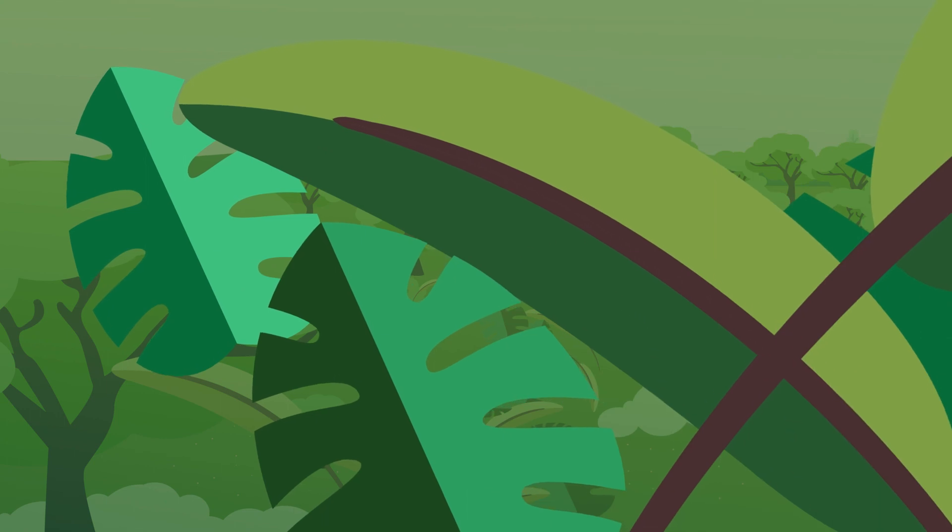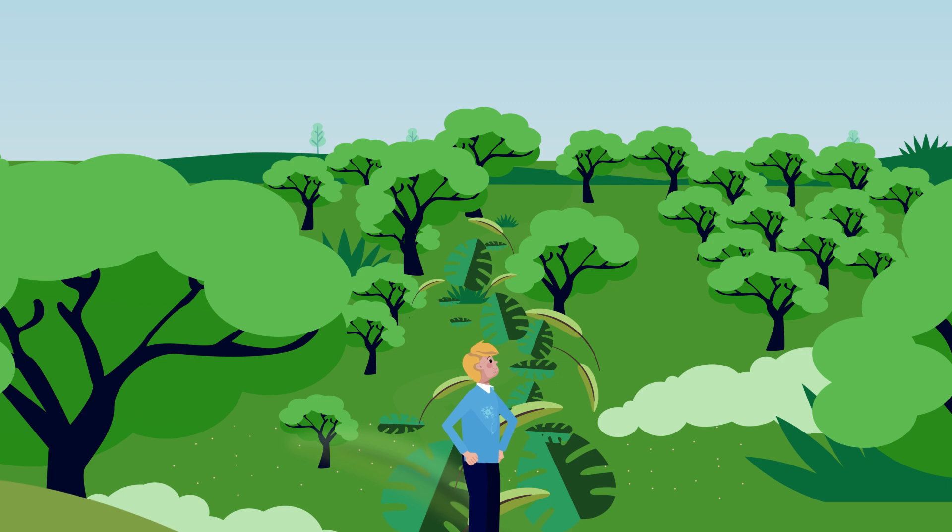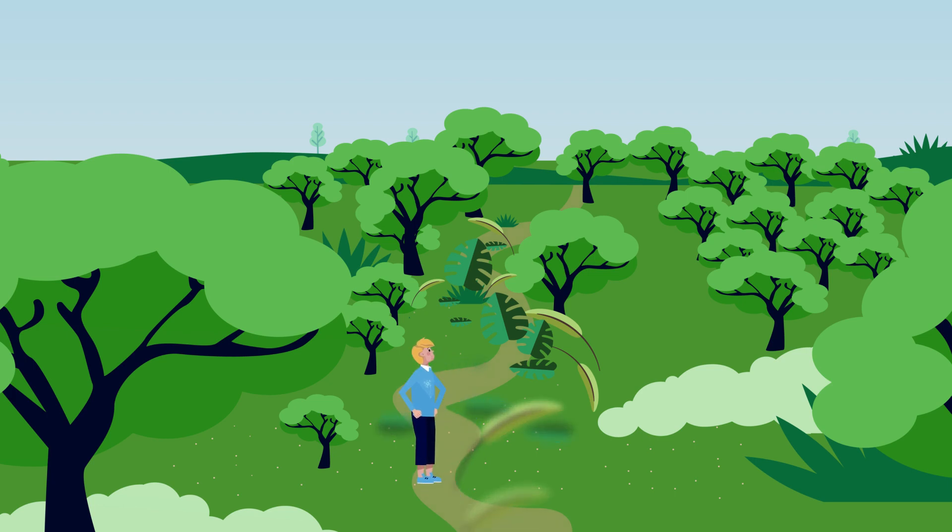We can compare the connections between your neurons to paths in a forest. Walking through a wild forest is difficult. You have to clear the vegetation to make your way. But the more you use the same path, the more a trail emerges, the easier and more practical it becomes, and the faster you can walk in it.